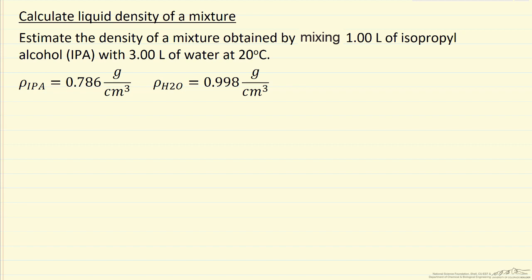If we assume that, then the equation that results in terms of density is one over the density of the mixture equals mass fraction of one of the species, isopropyl alcohol, over its density - that's pure component density - and then the mass fraction of water over the density of water. And all of these are at 20 degrees C.